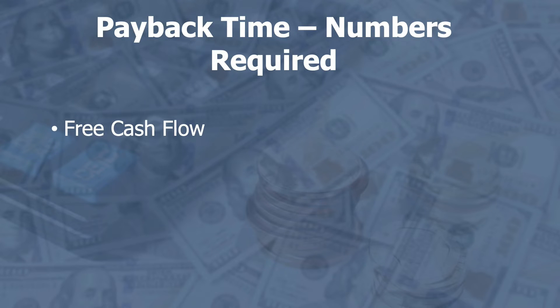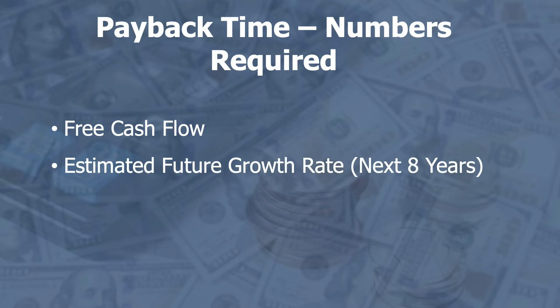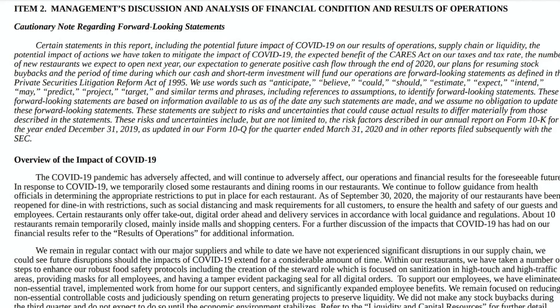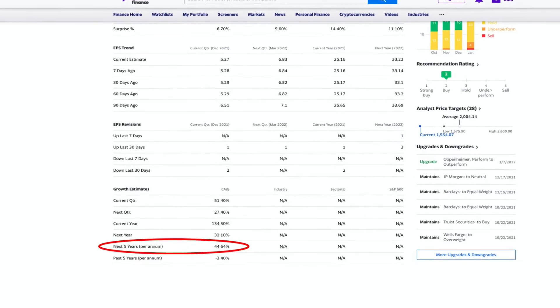For the payback time we need the free cash flow — calculated by taking cash from operating activities and subtracting capital expenditure (also called purchase of property, plant and equipment). We also need the estimated future growth rate for the next eight years and shares outstanding for a per share amount. To estimate the growth rate, look at historic rates for sales, earnings, free cash flow, and equity, then read financial statements to understand future possibilities, total addressable market, and management discussions. You can also compare with analyst estimates on Yahoo Finance.